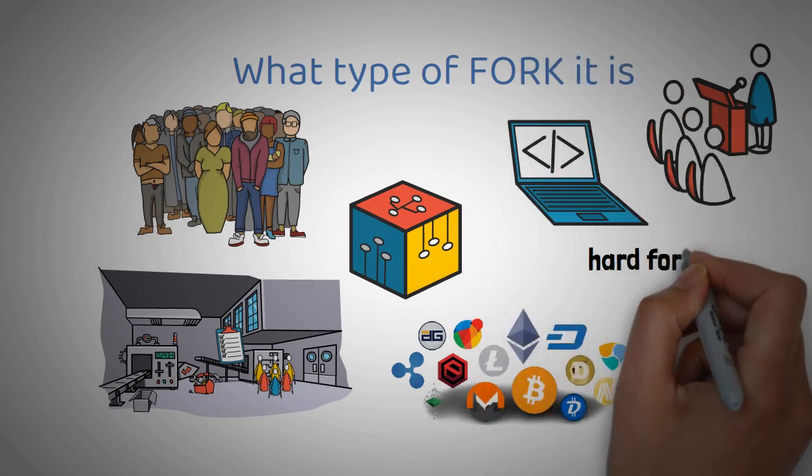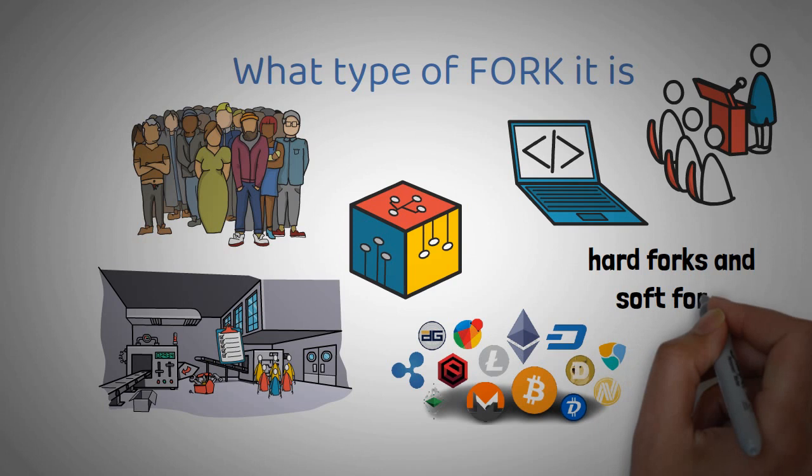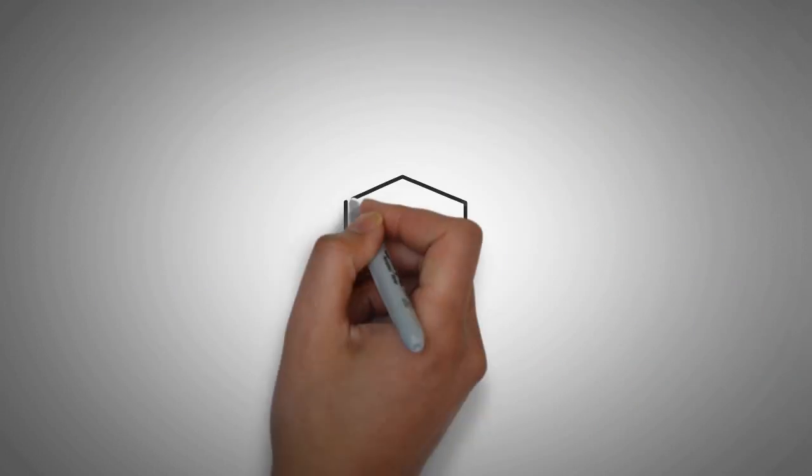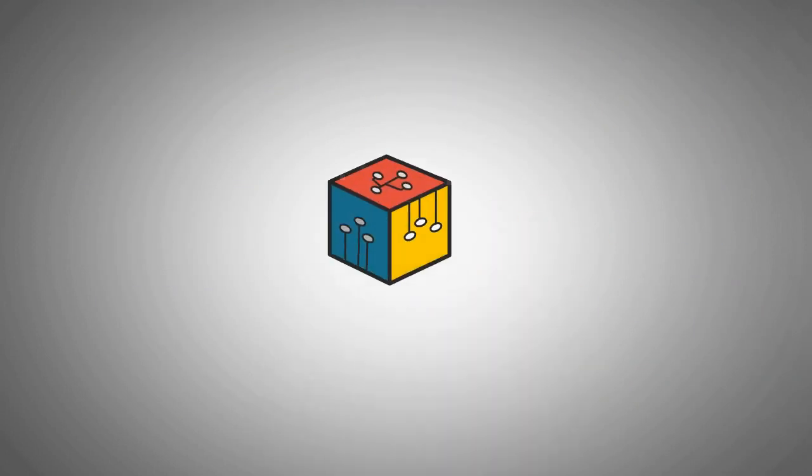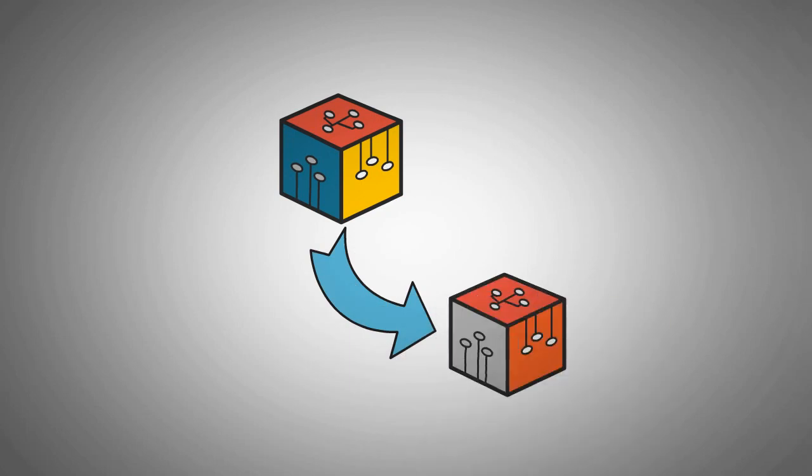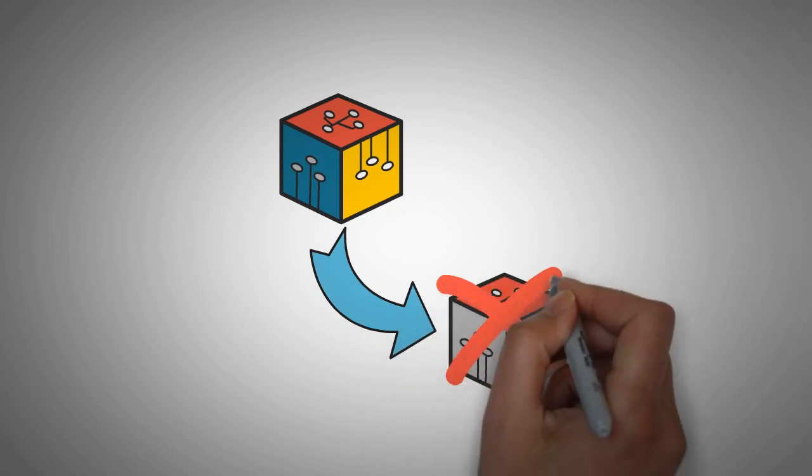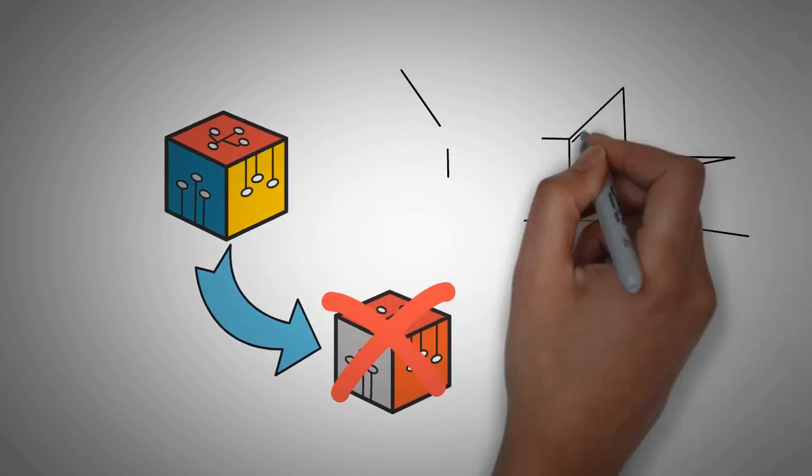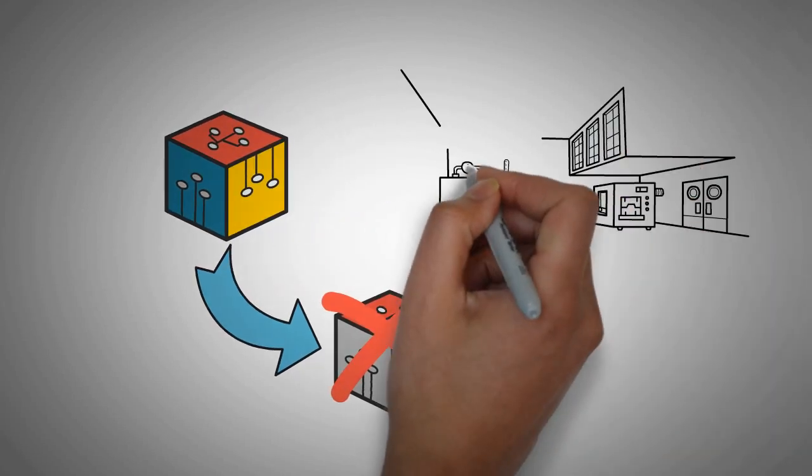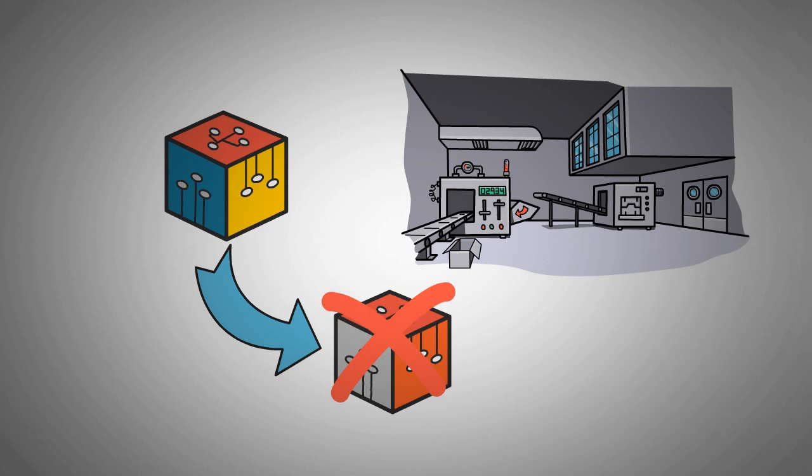Now, there are two types of forks: hard forks and soft forks. A hard fork is when the new blockchain is not compatible with the old blockchain, which means that the old blockchain will no longer be supported or updated. This is exactly what happened in our previous example, where you and the other workers completely abandoned the previous factory.